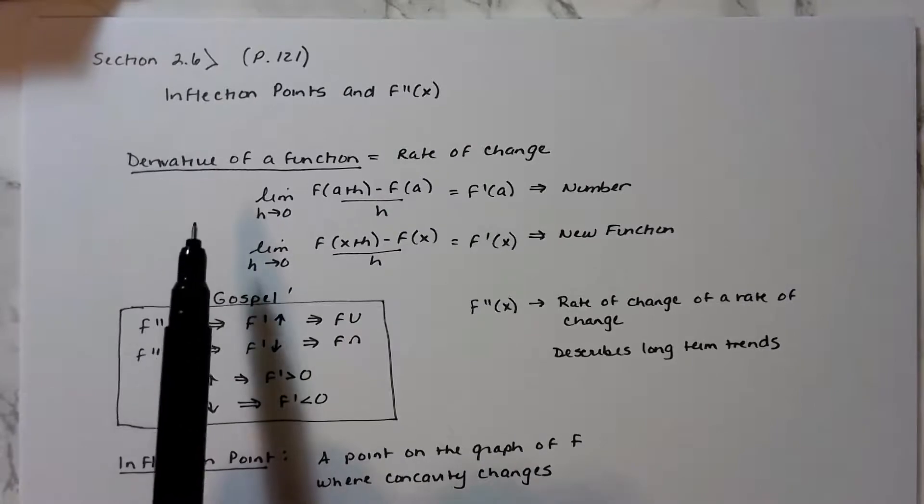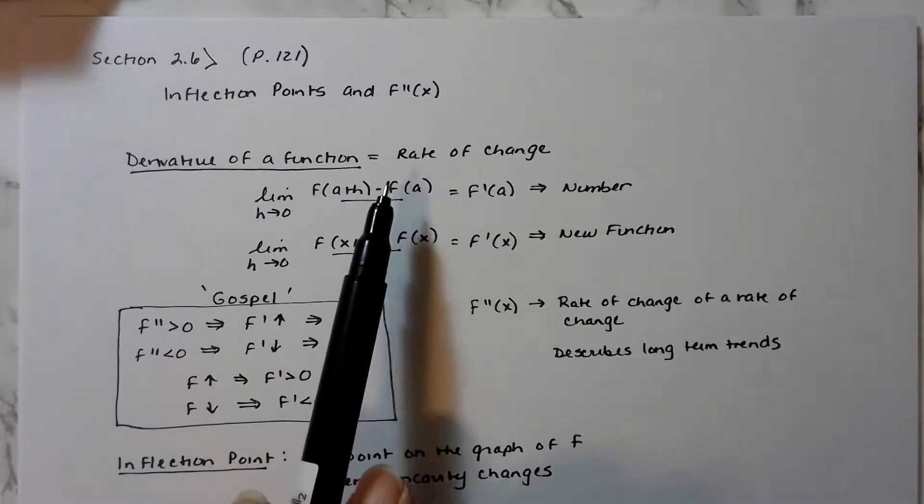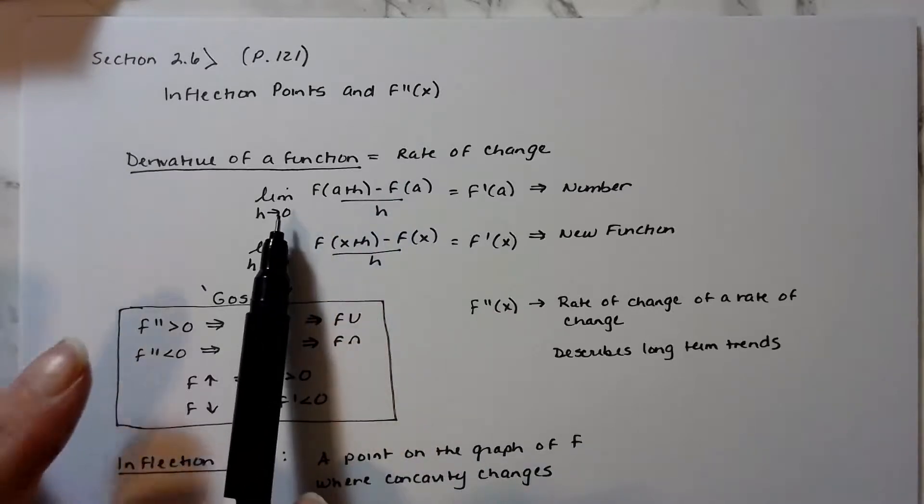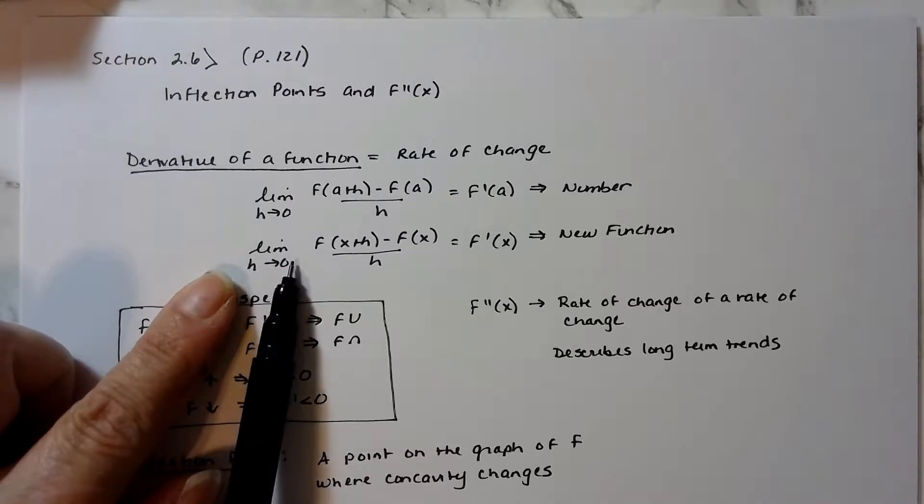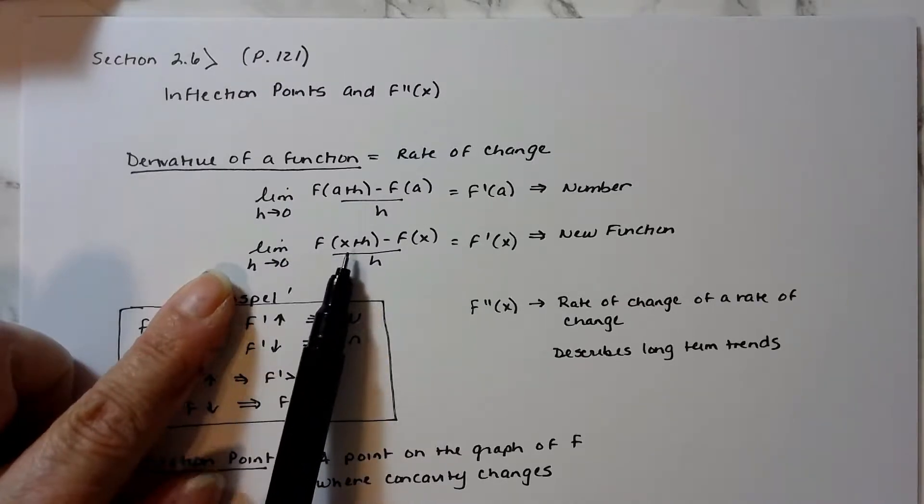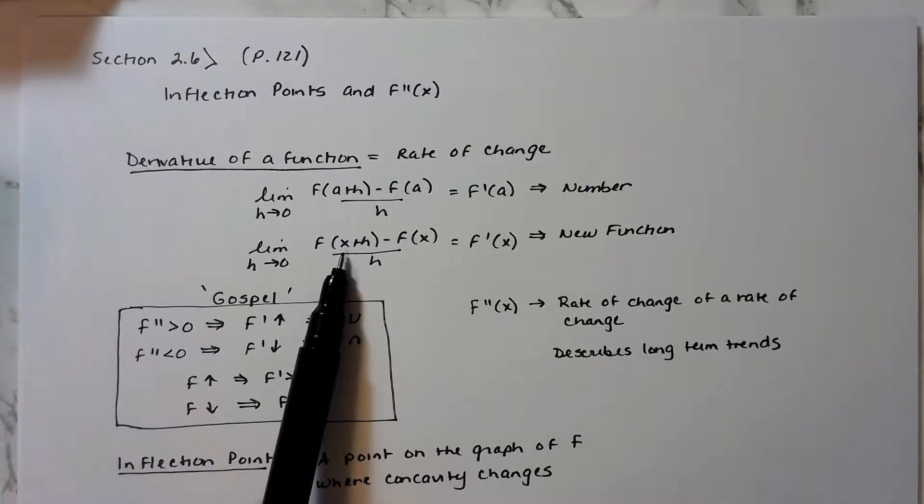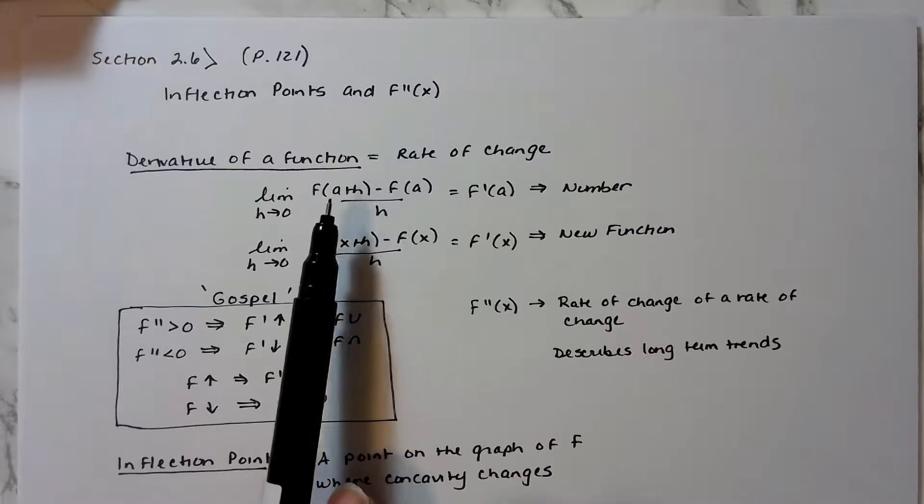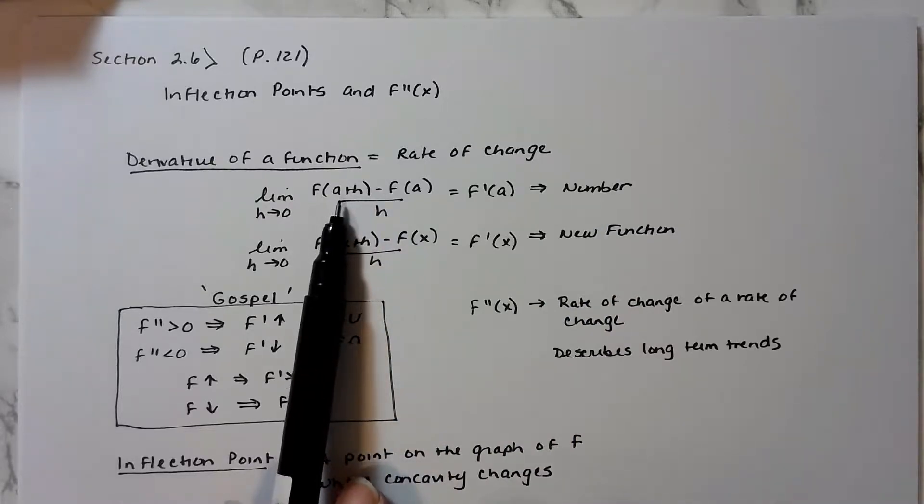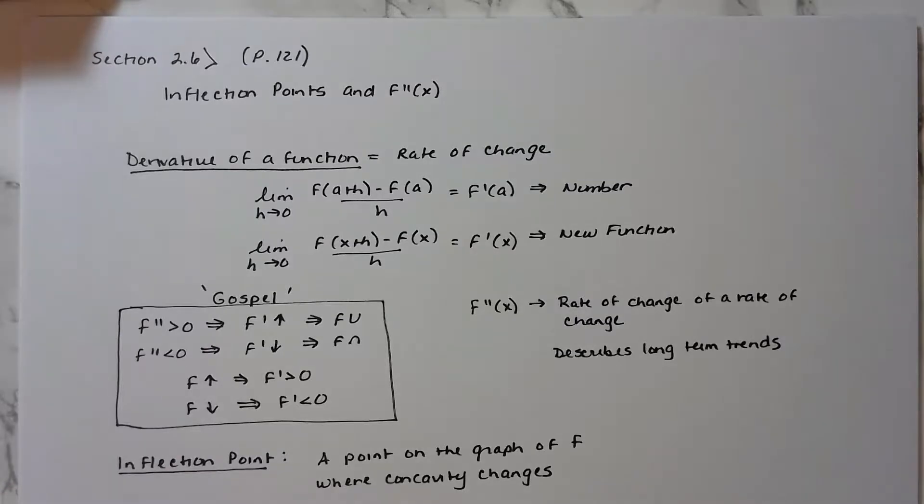We know that the derivative of a function is equal to a rate of change, and it could be the rate of change of a function at a point x equals a, or it could be the rate of change of a function over its entire domain. In the case above, we are plugging the point of interest in, and when all is said and done, we end up with a number.